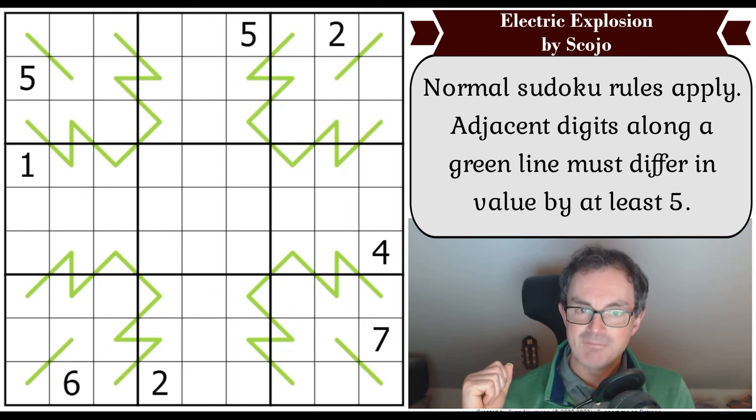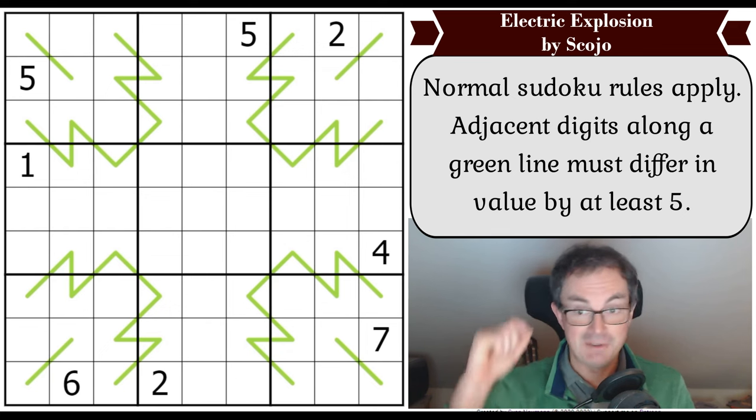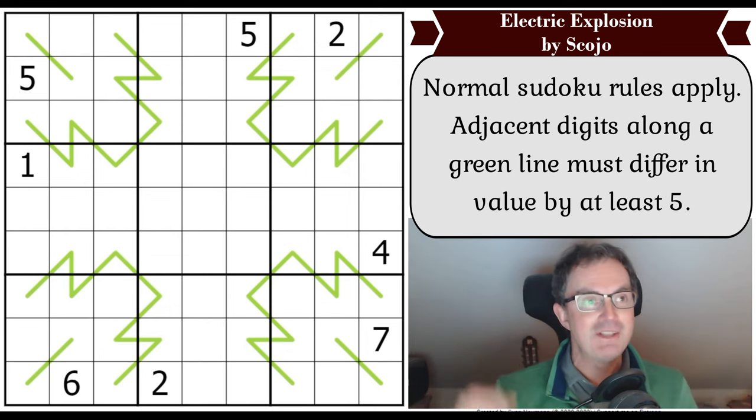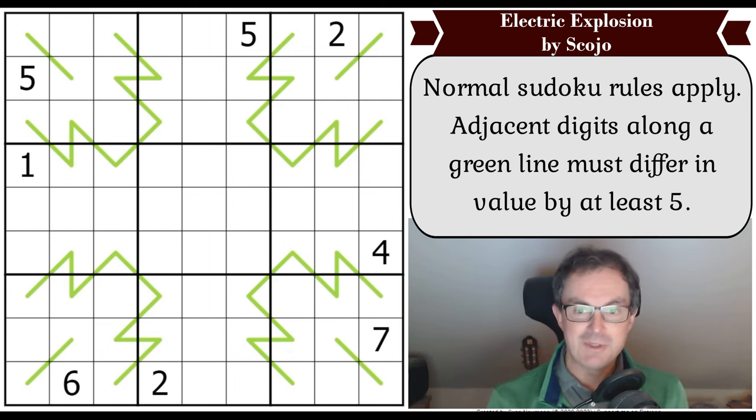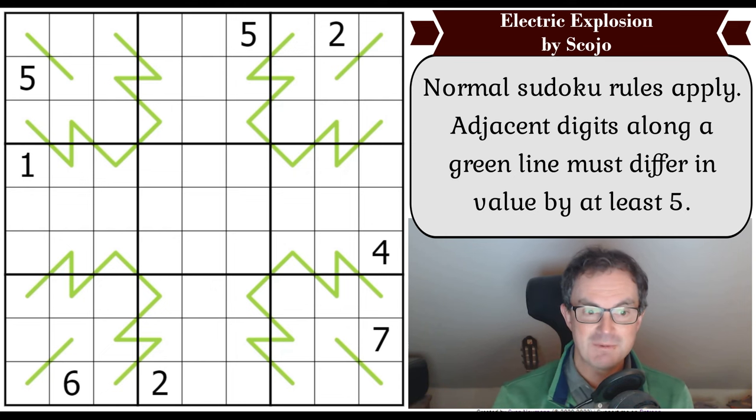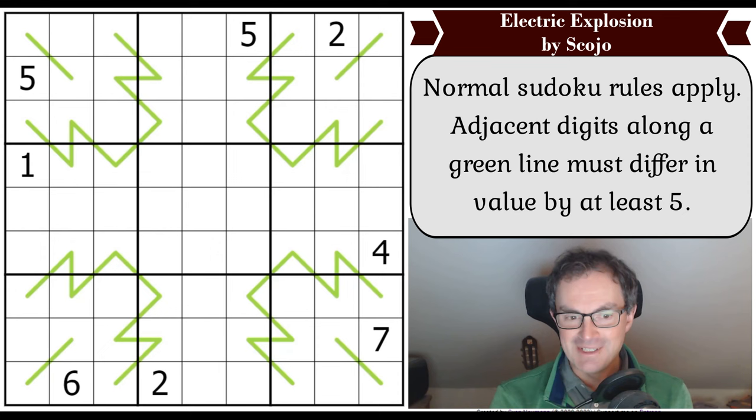This one, Electric Explosion, repeats the trick apparently. It has one star for difficulty on Logic Masters Germany, although I did note in the comments there were some people saying it should have two stars. It's either one or two stars, and it's just German Whispers rules today, nothing more complicated than that. I get eight given digits, which is a generosity not often afforded to me these days.